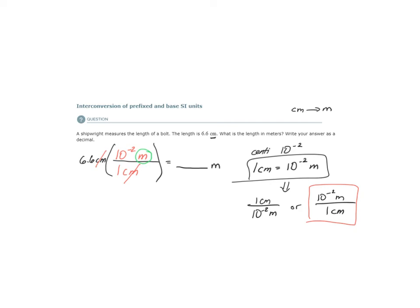So when you put this into the calculator, you would write 6.6 times 10 to the minus 2, and that would be our answer. If you want to write this as a decimal, this would be 0.01. The answer that I get is 0.066 meters.